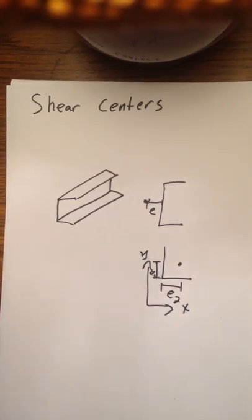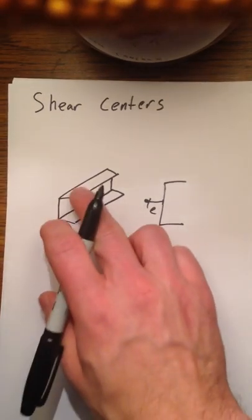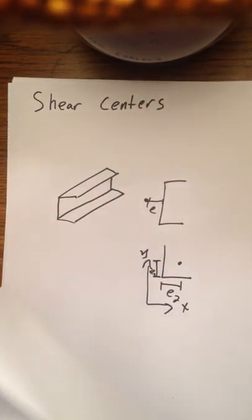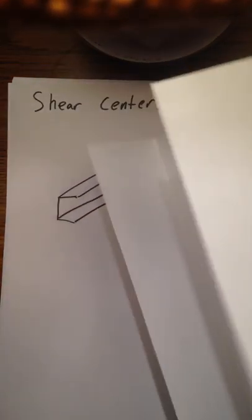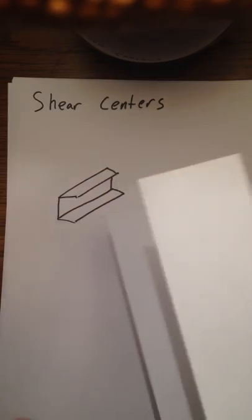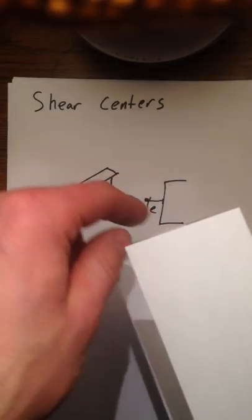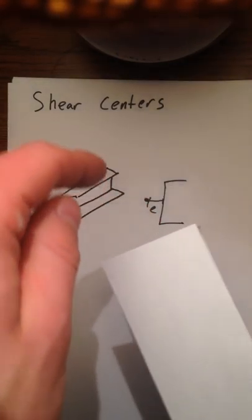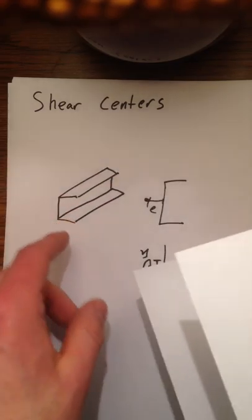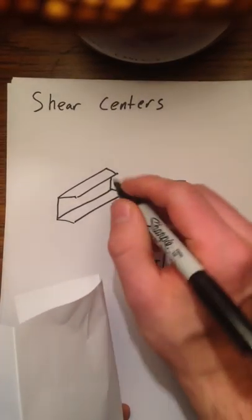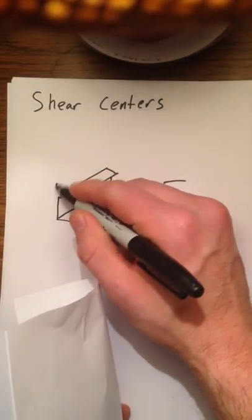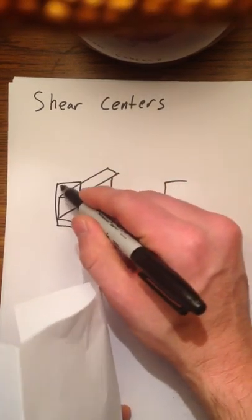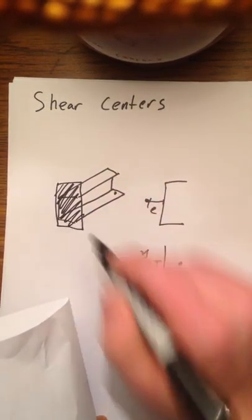To picture this, because it's weird, the book had this cantilever beam here, so I made a little one out of paper. Imagine this back end is fixed with my hand, and this front end has a force going straight down. If we put this force right here, call this end fixed.